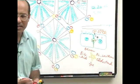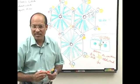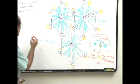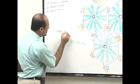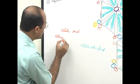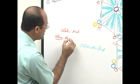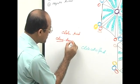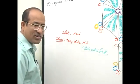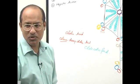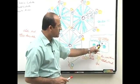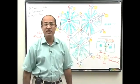The bile acids include cholic acid and chenodeoxycholic acid. Cholic acid and chenodeoxycholic acid are the minimum you are supposed to know about bile acids. These are the components of the bile.